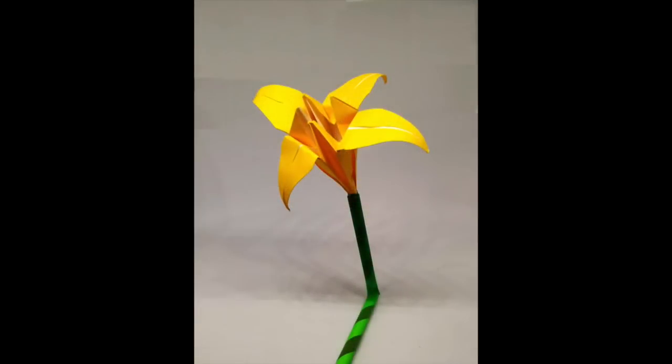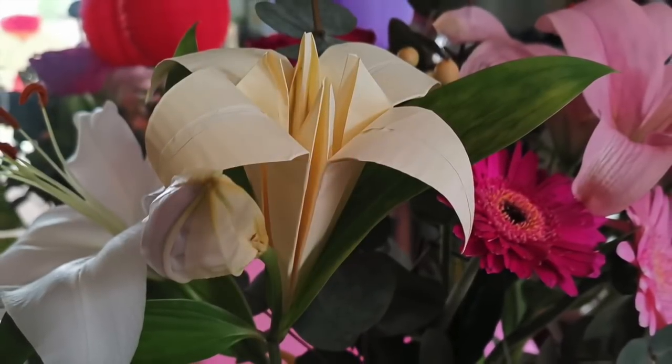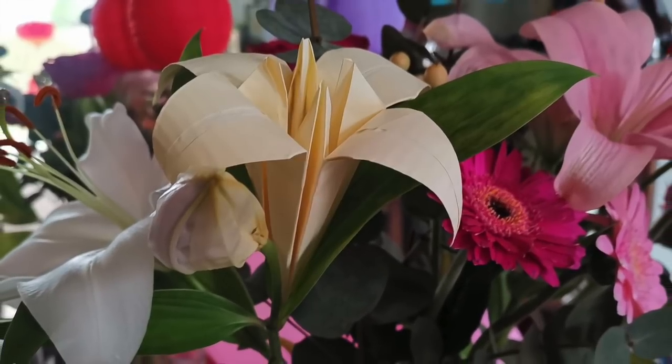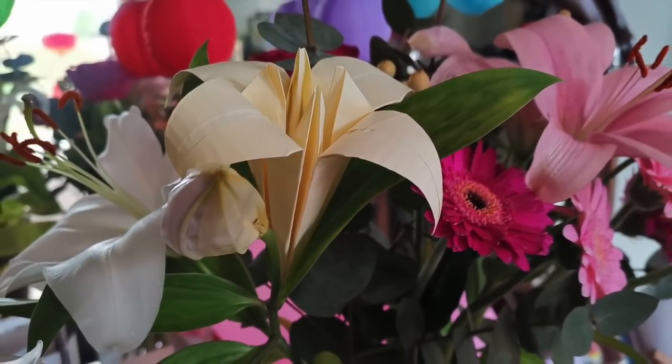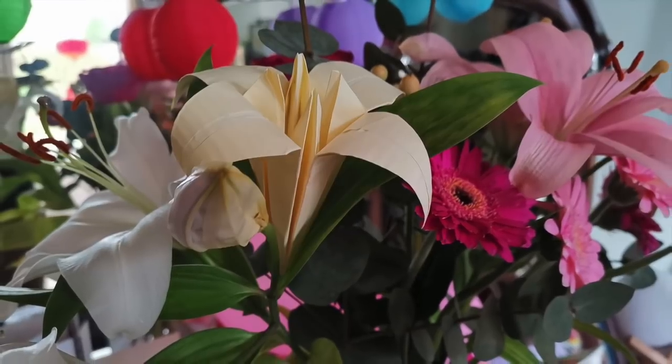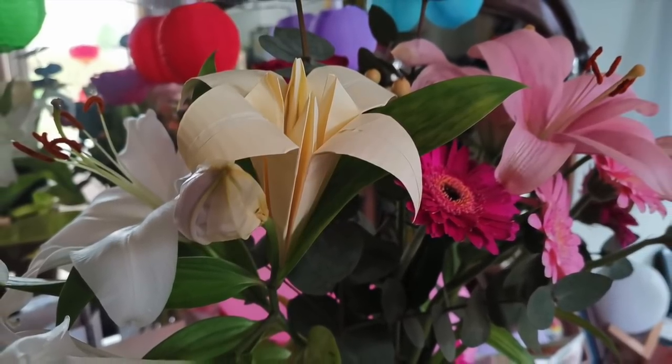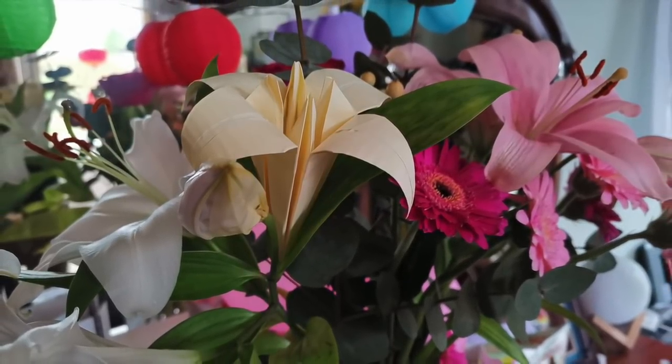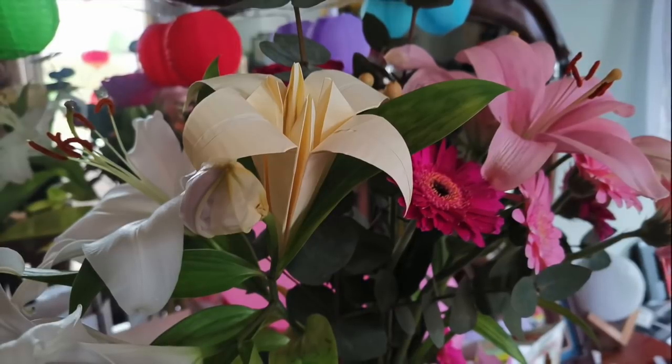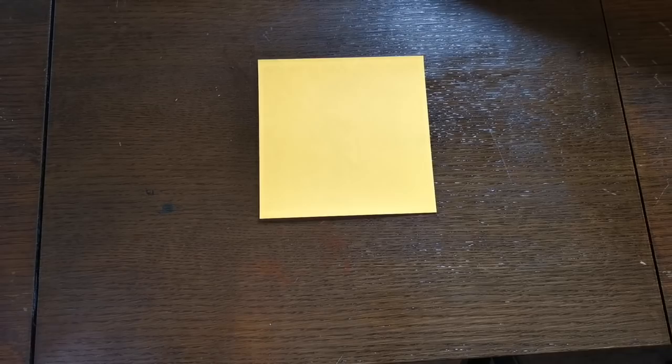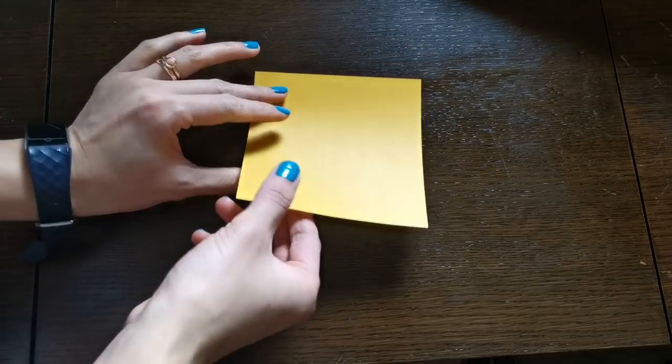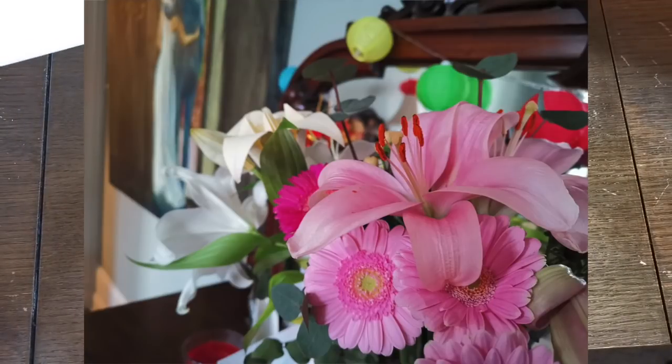These paper lilies can make a great substitute for the real thing as a bunch of flowers. So if you need to give some flowers when they're not in season, or if you've forgotten to buy flowers and the shops have already closed, then these origami lilies could be ideal. The only thing you need is a piece of square paper. You can use any colors. Lilies come in a wide range of colors including white, yellows and oranges, pinks and reds, and purples.